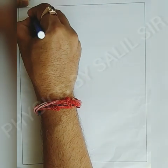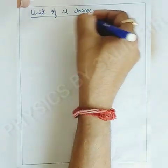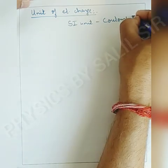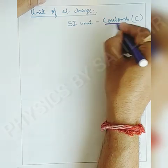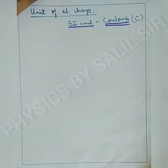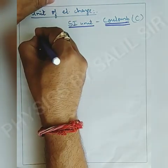Now we will talk about the unit of electric charge. The SI unit of electric charge is coulomb, represented by capital C. Coulomb was the scientist who discovered this property — how charges are developed, their properties, and various other characteristics of charges.